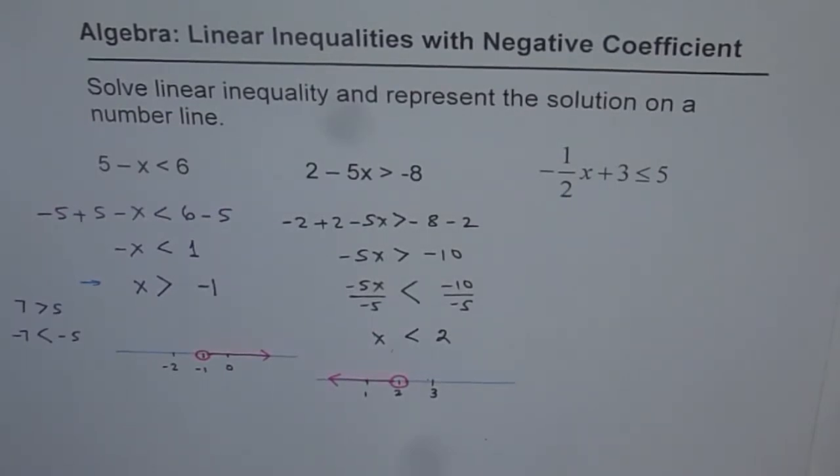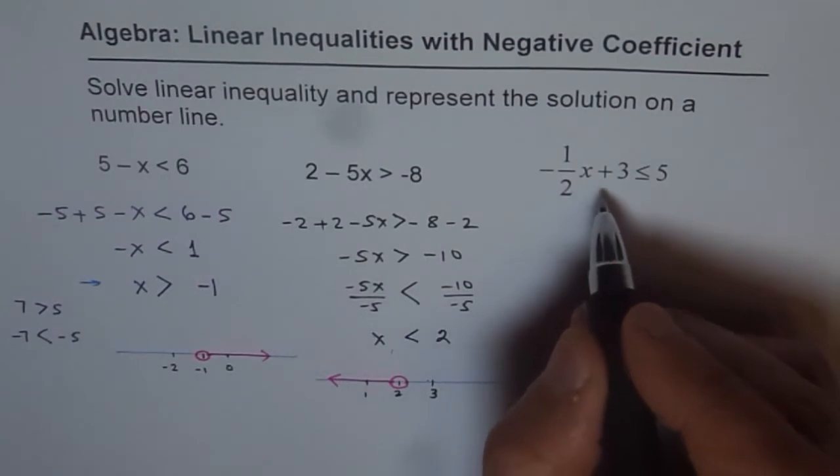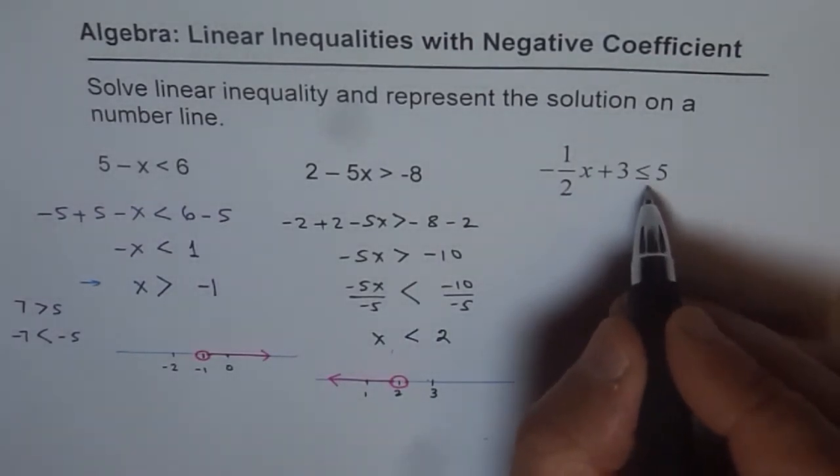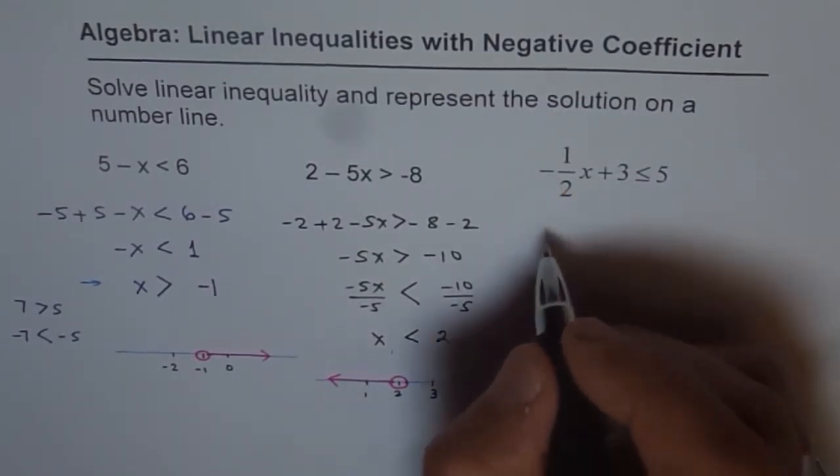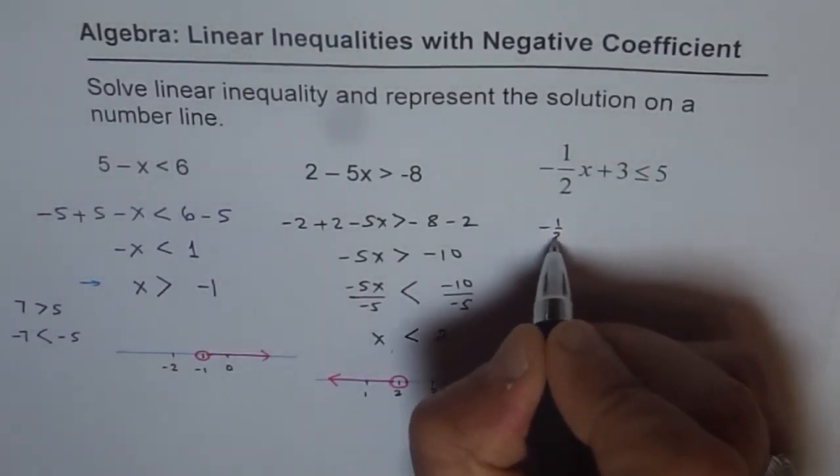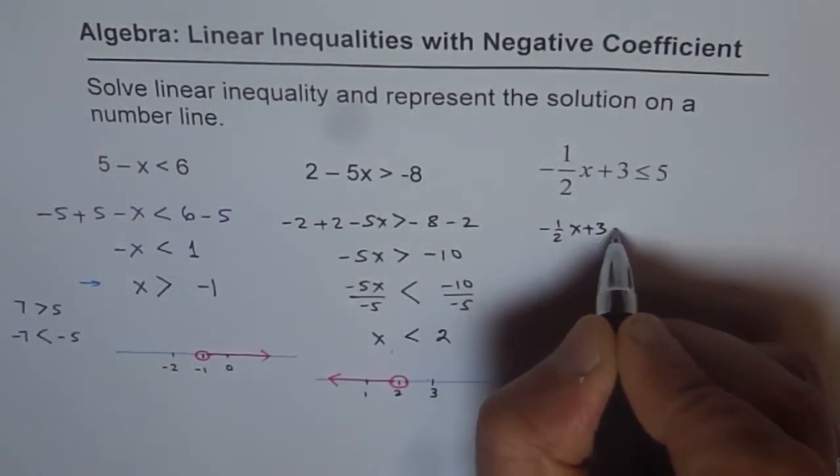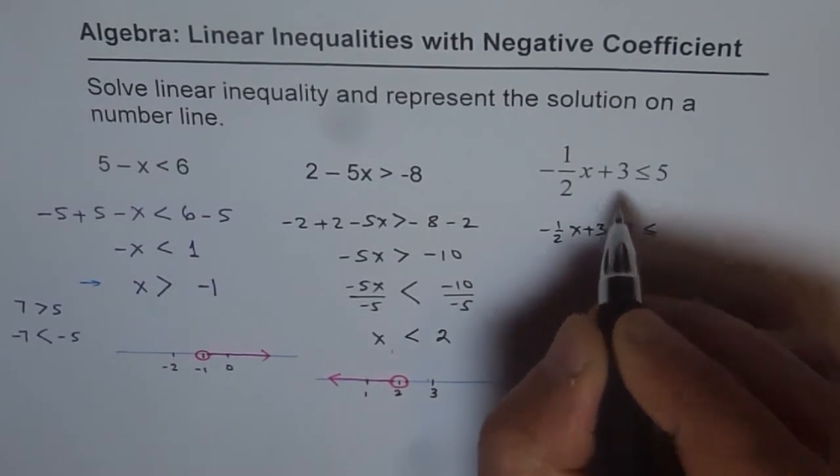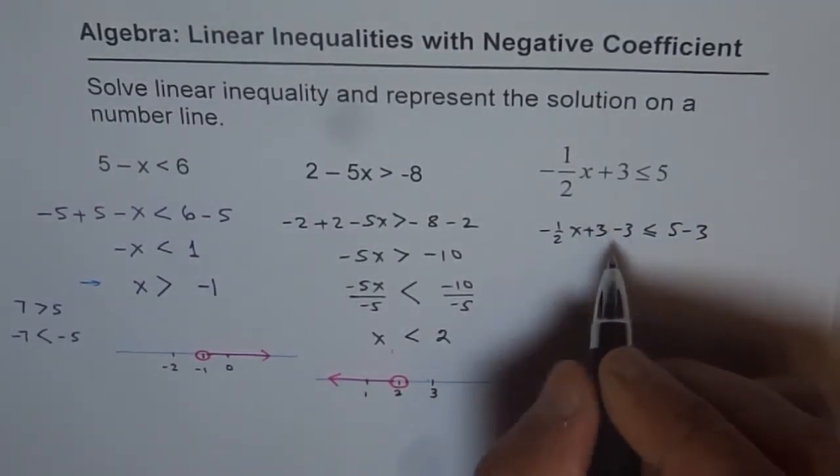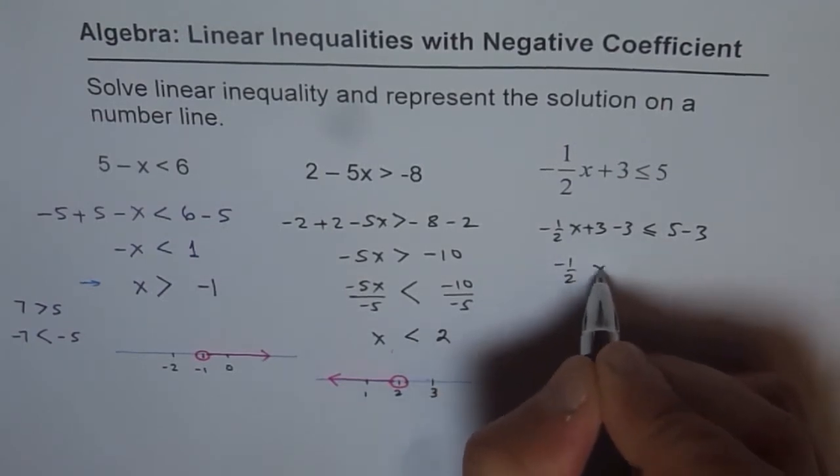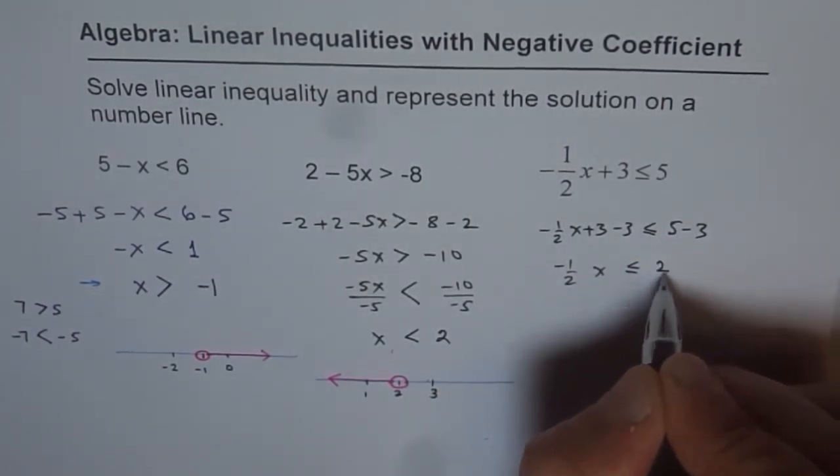The third problem here is minus half x plus 3 less than equals to 5. I'll request you to pause the video, write down the solution and then check with mine. Now here it is. So we have minus half x plus 3 minus 3 this time because we want to get rid of 3 first. So 5 minus 3. So we get minus half x is less than equals to 5 minus 3 is 2.